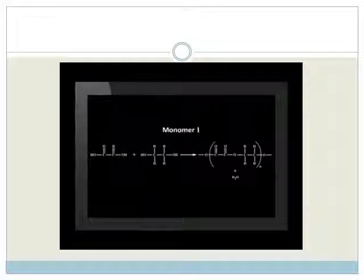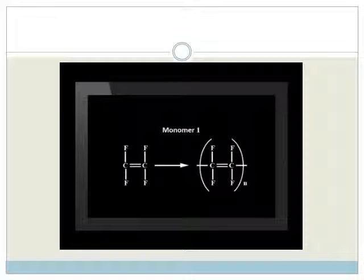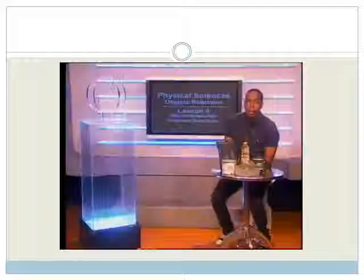The first polymer is a condensation polymer. Can you see how the water is formed? The second monomer makes an addition polymer. This one is called PTFE or polytetrafluoroethene and is used in nonstick pans.